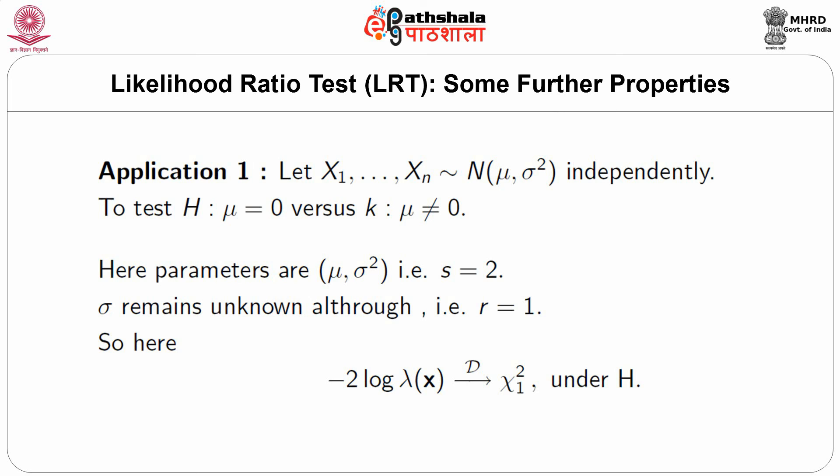Application 1: Let X_1,...,X_n be iid Normal(mu, sigma²). Suppose we test H: mu=0 versus K: mu≠0. Here the parameters are mu and sigma², so s=2. Sigma remains unknown throughout, so r=1. Therefore s-r = 2-1 = 1, and minus twice log lambda(X) converges in distribution to chi-square(1) under H.